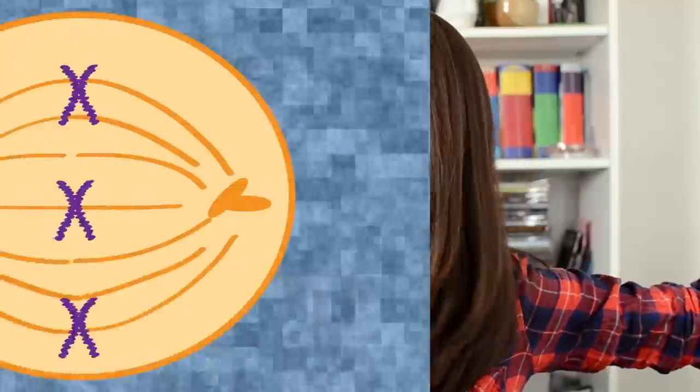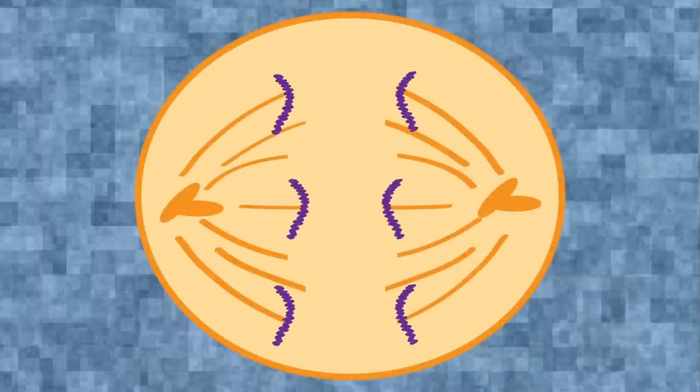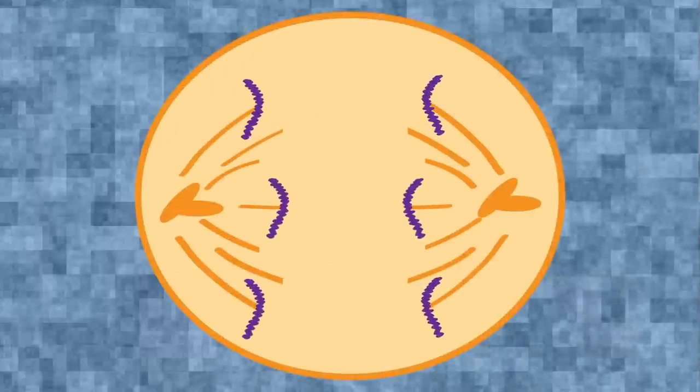Next, in anaphase, the sister chromatids break apart. The spindle fibers pull them to opposite sides of the cell. This way, each side of the cell has one sister chromatid from each pair.